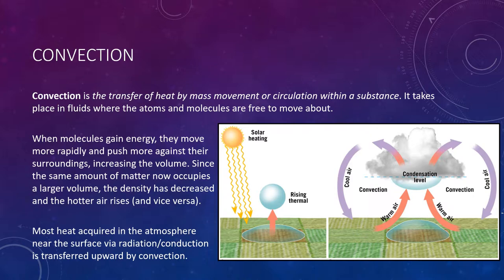Much of the heat transport that occurs in the atmosphere occurs via convection. Convection is the transfer of heat by mass movement or circulation within a substance. It takes place in fluids — liquids like the ocean and gases like the air — where the atoms and molecules are free to move about. When molecules gain energy, they move more rapidly and push more vigorously against their surroundings, increasing the volume. Since the same amount of matter now occupies a larger volume, the overall density decreases, so hotter air will rise, and cooler air will sink. Most of the heat acquired in the lowest portion of the atmosphere by way of radiation and conduction is transferred upward by convection.